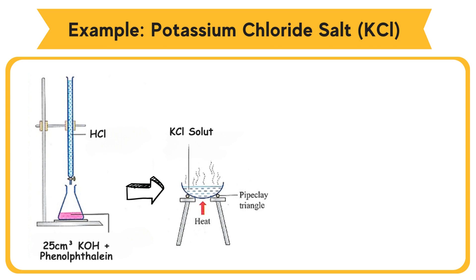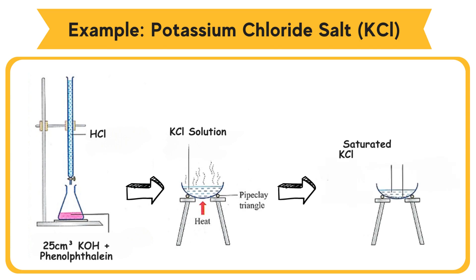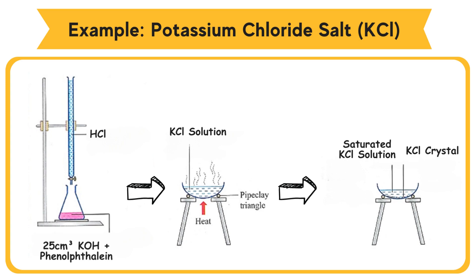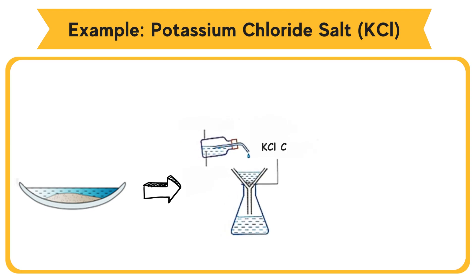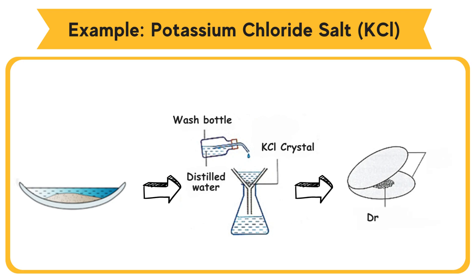Heat the solution slowly to evaporate the water so that a saturated solution is obtained. Let the saturated solution cool down to allow crystallization to occur. Filter the contents of the evaporating dish to obtain potassium chloride crystals KCl. Rinse the crystals with a little amount of distilled water. Dry the crystals by pressing them between two pieces of filter papers.